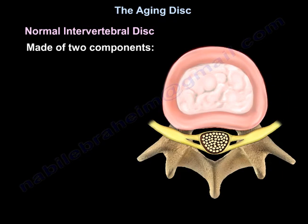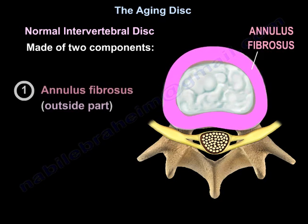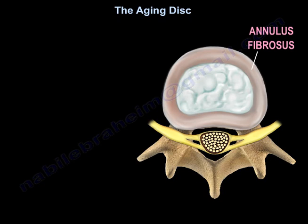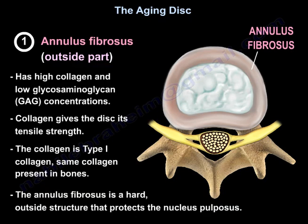The normal intervertebral disc is made of two components: the annulus fibrosis, which is the outside part, and the nucleus pulposus, which is the inside part. The annulus fibrosis has a high collagen and low GAG (glucosaminoglycan) concentration. Collagen provides tensile strength, and the collagen in the annulus fibrosis is type 1 — the same collagen present in bone — making it a hard outside structure that protects the nucleus pulposus.